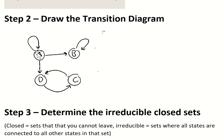For example, once you go into the set of D and C, there's no way to leave because you will just continually cycle through states D and C.